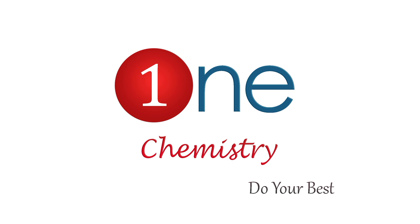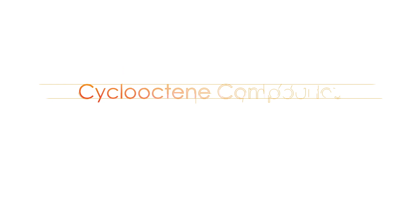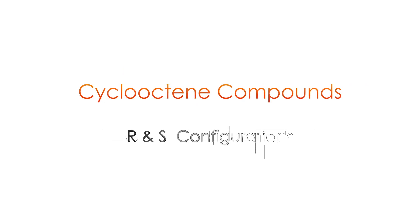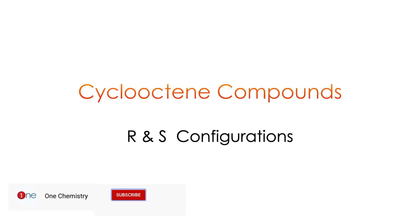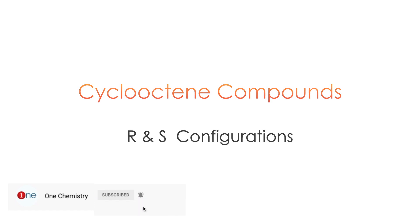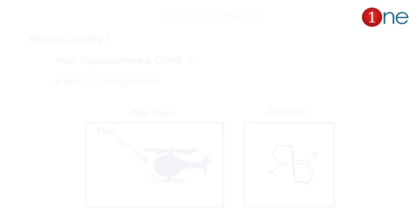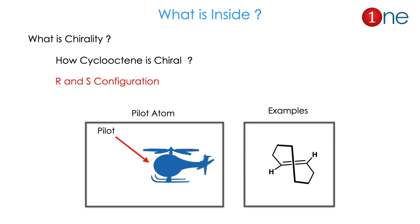Welcome to One Chemistry — always try to do your best. In this video we are going to see how we can find R and S configuration of a cycloalkene compound. We will see how cycloalkene is chiral and how we can assign the configuration step by step. Inside this video we will cover chirality, how cycloalkene can be chiral, and how to find R and S configuration.